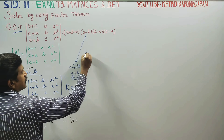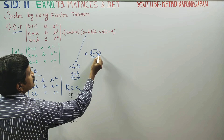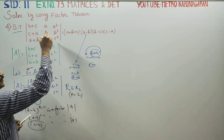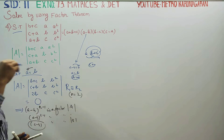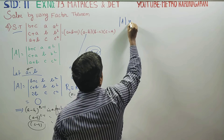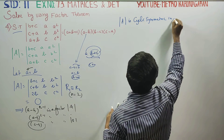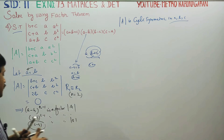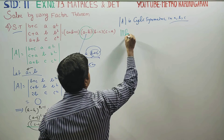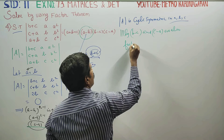The determinant A is cyclic symmetric in a, b, c. Because it is cyclic symmetric, (b−c) and (c−a) are also factors of determinant A.